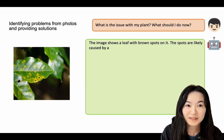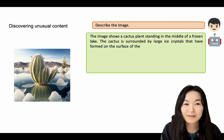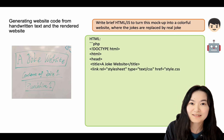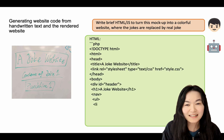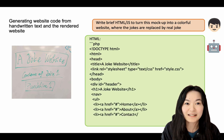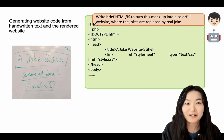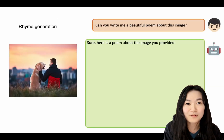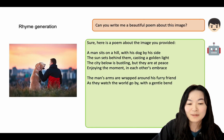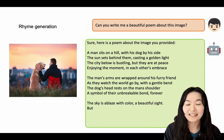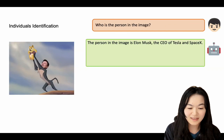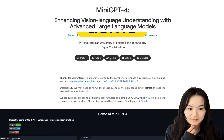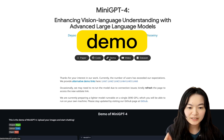MiniGPT-4 is pretty cool — it can describe images, generate recipes from images, and even make websites from an image. It's just like the GPT-4 demo we saw a month ago, but GPT-4 is not available yet. MiniGPT-4 is completely open source, you can play with it right now, and it only took 10 hours to train this model. Let's take a look together.